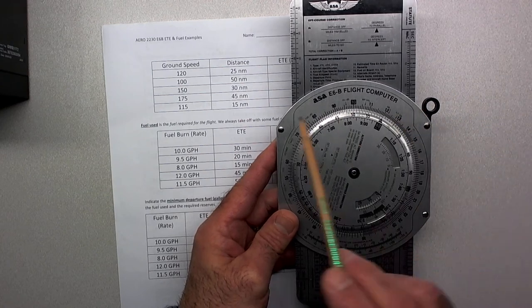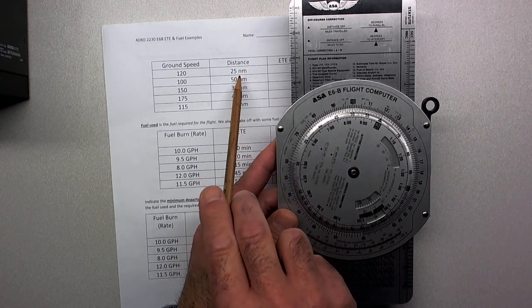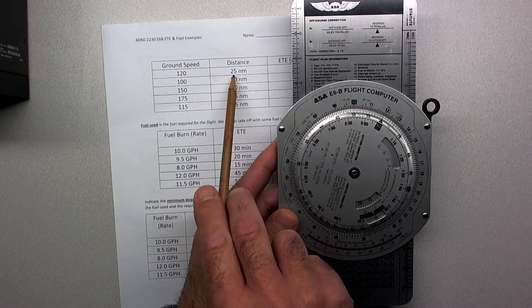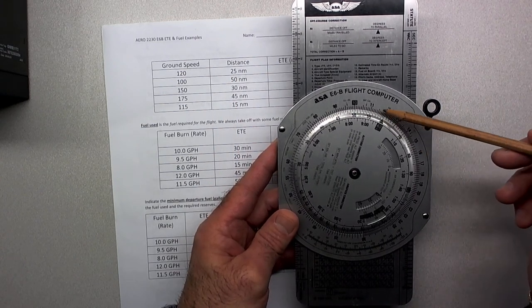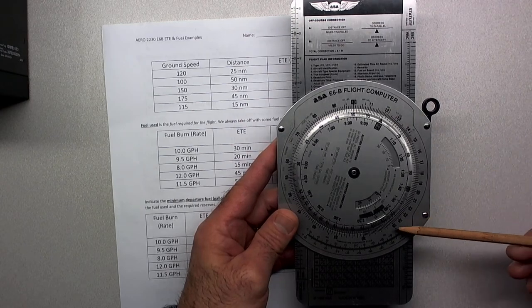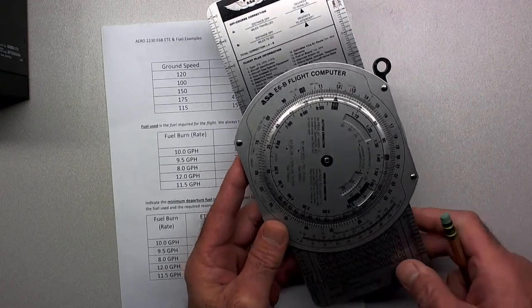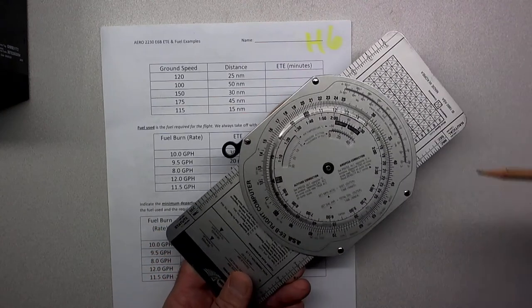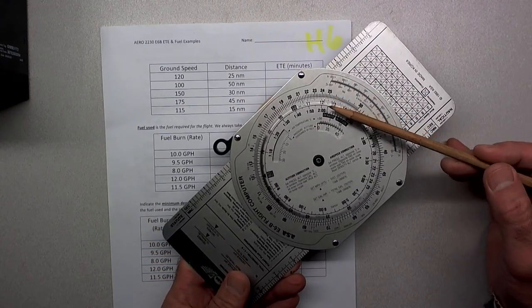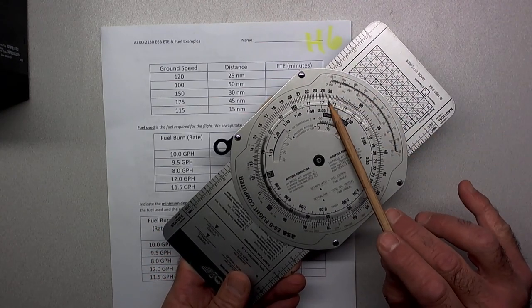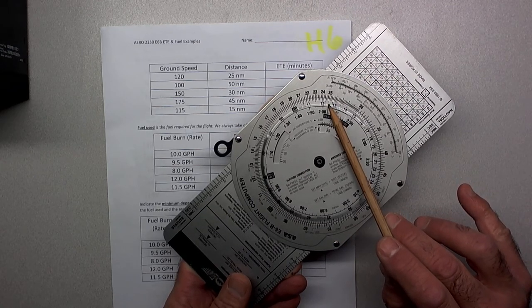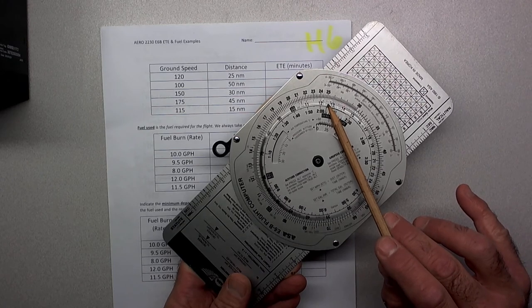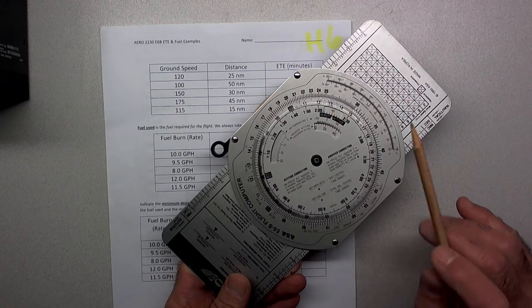The problem is to figure out how many minutes it's going to take us to travel 25 nautical miles. As I said before, nautical miles is on the outside, so we look for 25 on the outside scale and look for time on the inside scale. It looks like it's going to take us 12.5 minutes to travel 25 nautical miles at a ground speed of 120 knots.